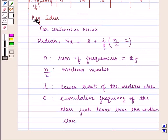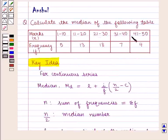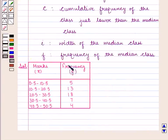With this key idea, we shall proceed with the solution. Since we are given an inclusive series, first we convert it into exclusive by deducting 0.5 from the lower limit and adding 0.5 to the upper limit. So the given distribution can be written like this.